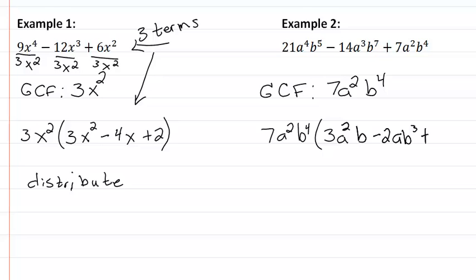Then we have a plus sign. I write that down. Seven divided by seven is one. I only need to write one if I end up with no variables. A squared divided by a squared is one, and b to the fourth divided by b to the fourth is one. So it looks like I need to have a one here. Remember that if I have three terms to start with, I have to have three terms inside my parenthesis. And I'm done.